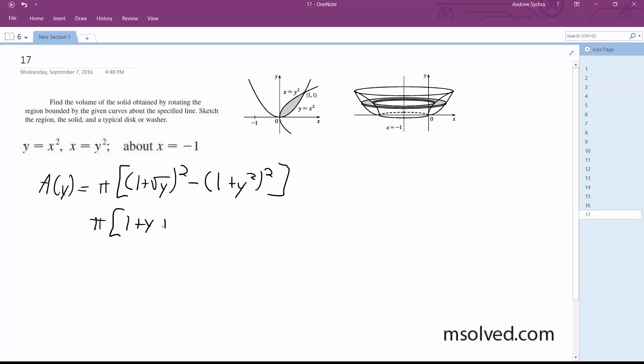We get 1 + y + 2√y - 1 - y⁴ - 2y². And simplified further this is π(2y^(1/2) + y - 2y² - y⁴).